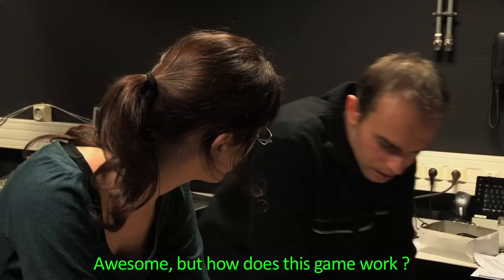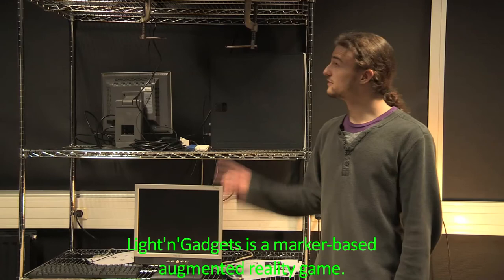But how does this game work? Light and Gadgets is a marker-based augmented reality game. A camera films a table to locate the elements of gameplay.